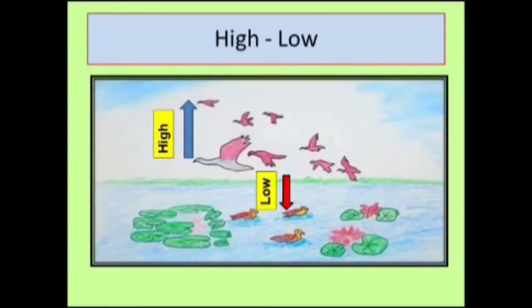Birds are flying in the sky and ducks are swimming in the pond. So birds are at higher level than ducks and ducks are at lower level than birds.